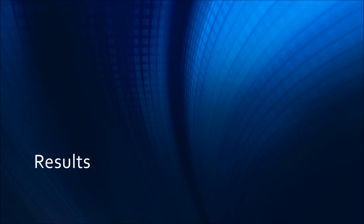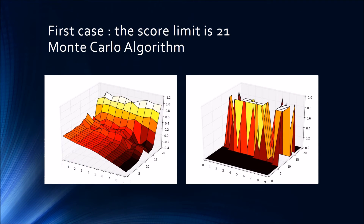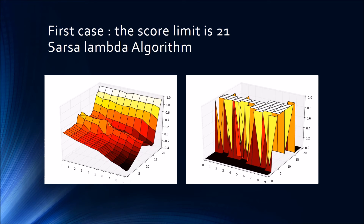Now I'll describe some results I obtained. First case: the score limit is 21. For the Monte Carlo algorithm, we can see that when the player's score is between 15 and 20, the value is very high, which is normal. When the dealer's score is very close to 0, the value is also very high because the dealer has very high chances of losing. On the right is the action: 1 is hitting and 0 is sticking — these are the optimal actions according to Monte Carlo. For Sarsa lambda, the value function on the left is very similar, and we can see the optimal actions on the right.